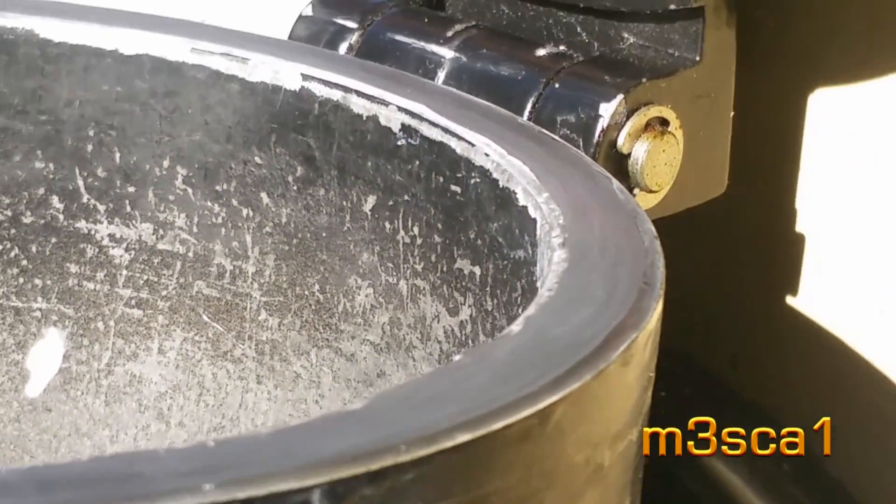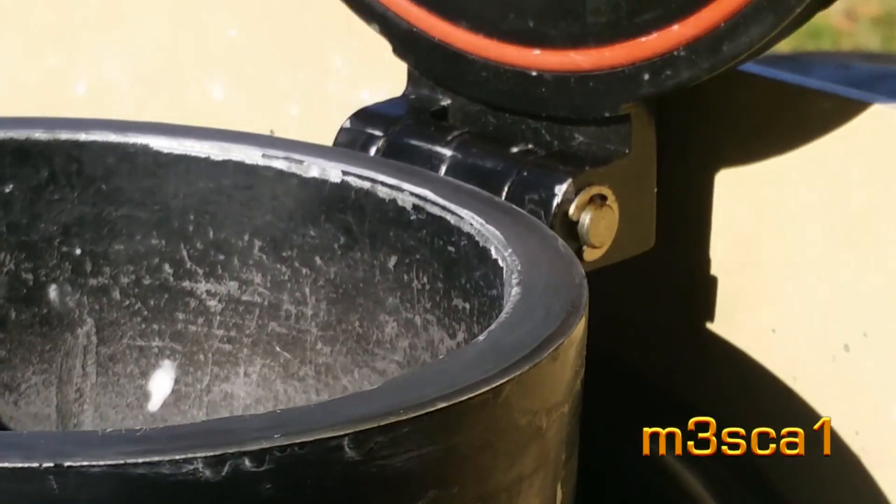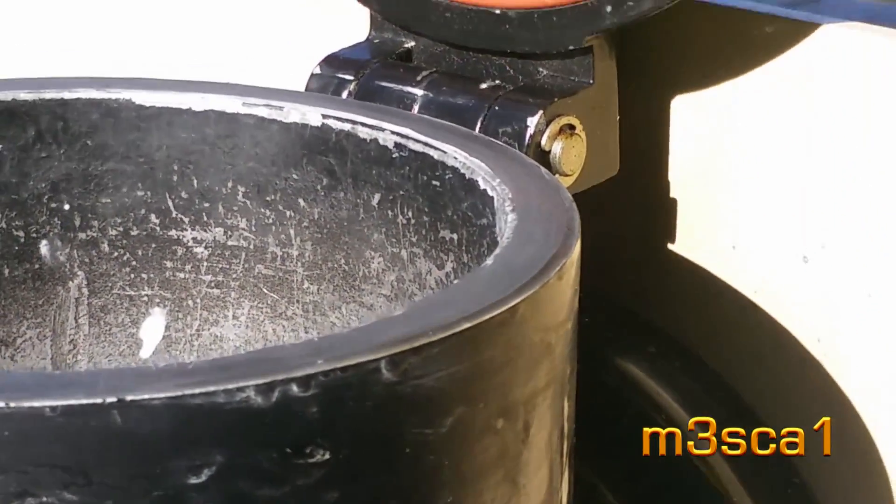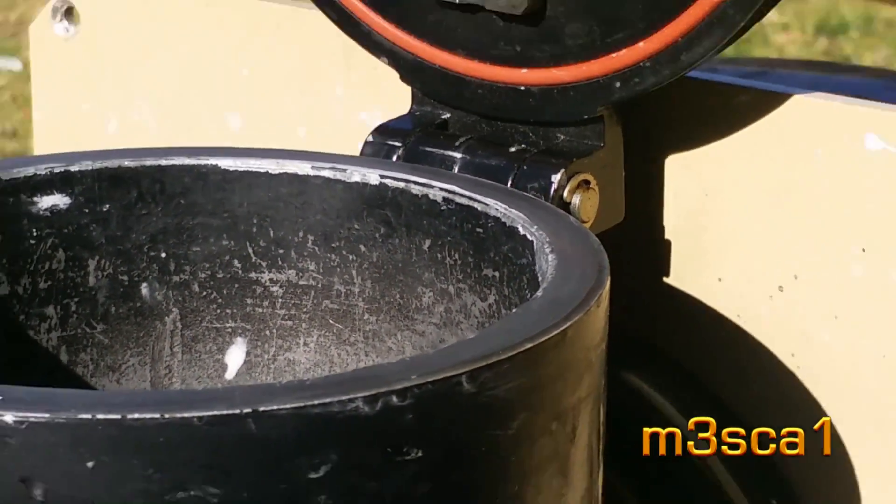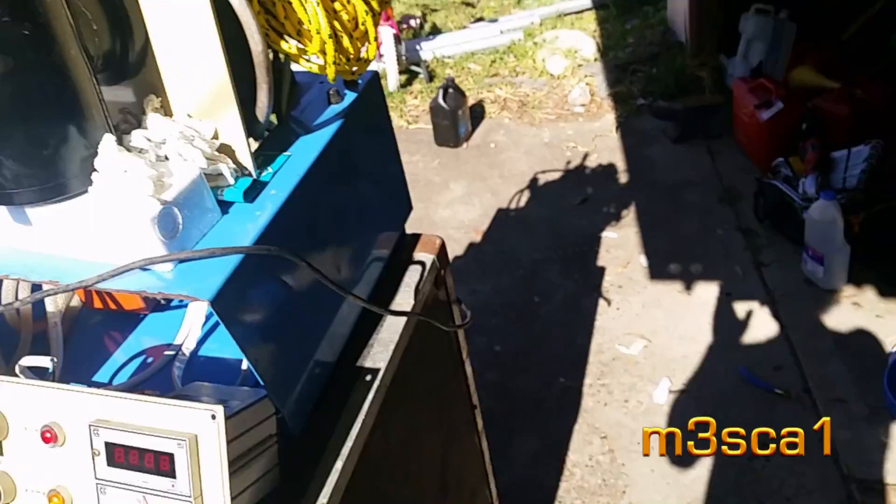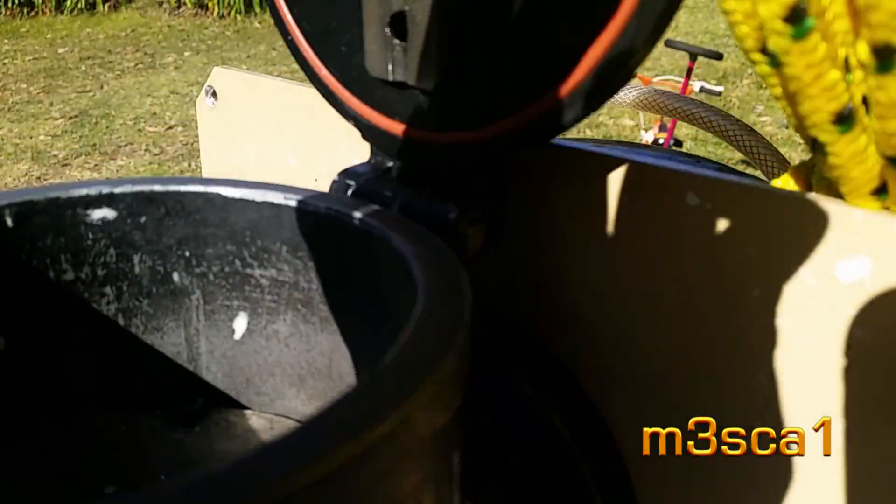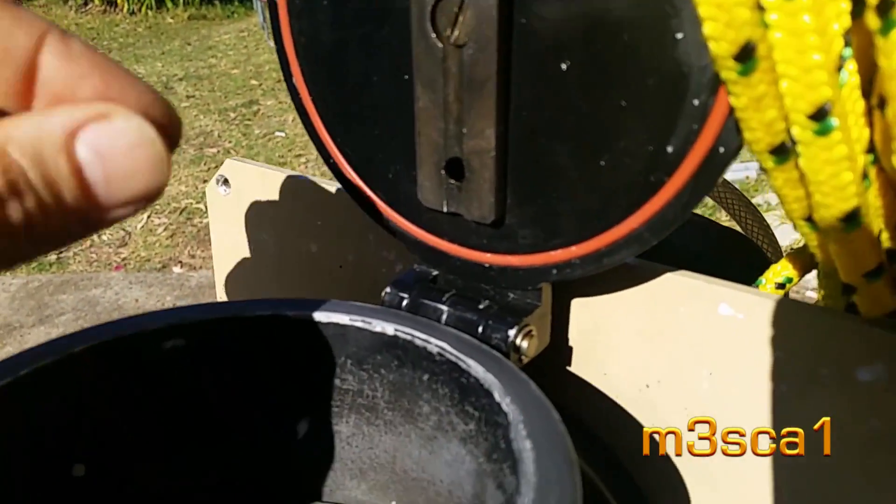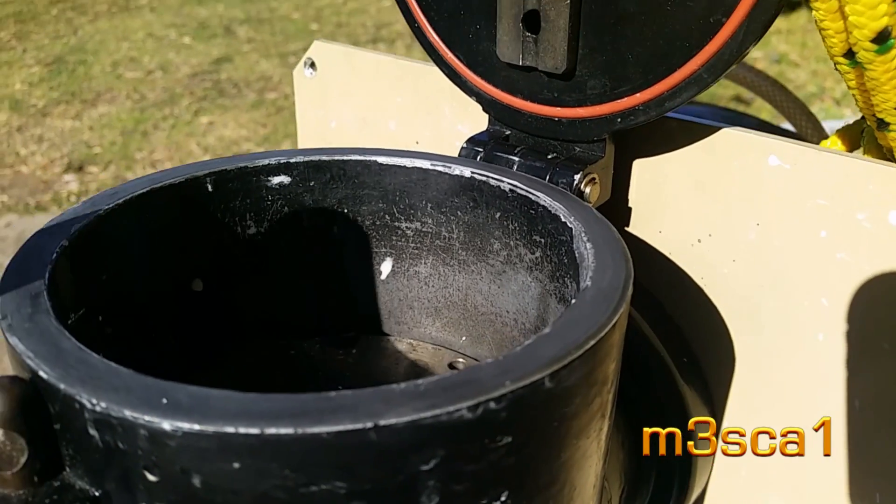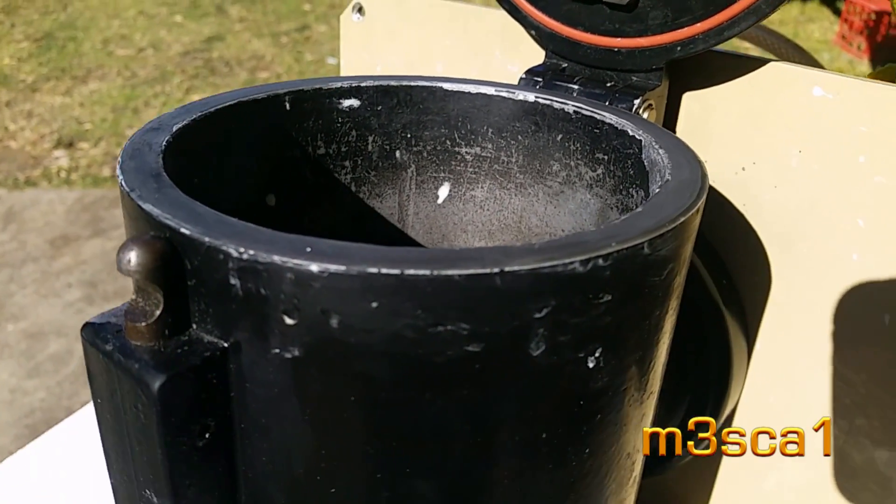That was really easy to work with because any low points that weren't high enough, I could just apply another dab. Because it's ultraviolet setting, I could pull the machine into the shade, put a few dabs or drops where they needed to be to build it up, move it back out into the sun. It cures in five minutes so I can start sanding again.